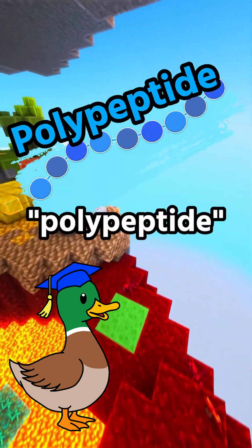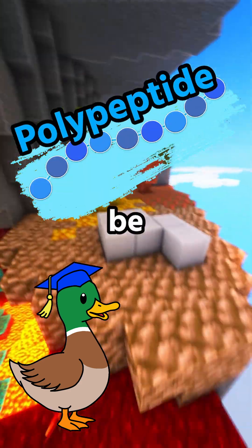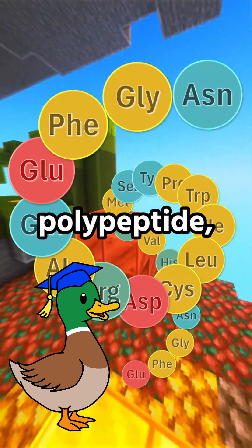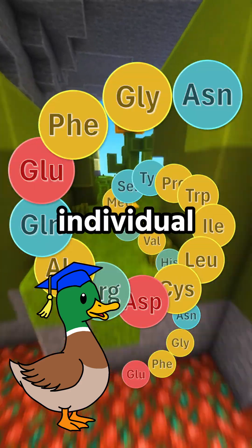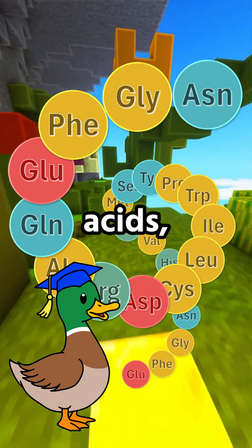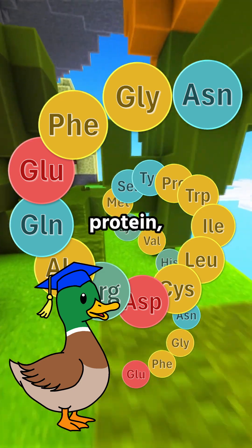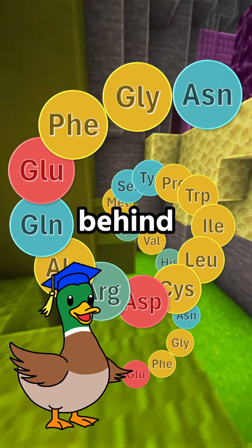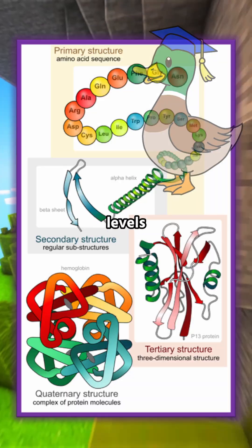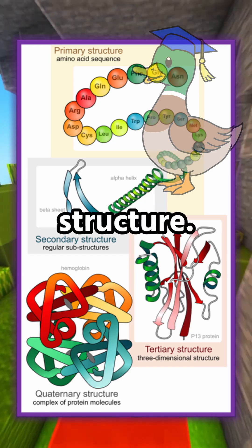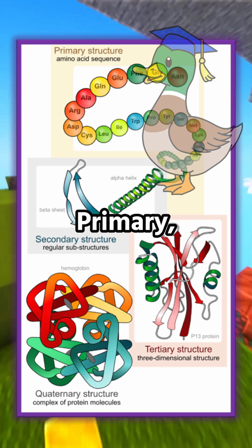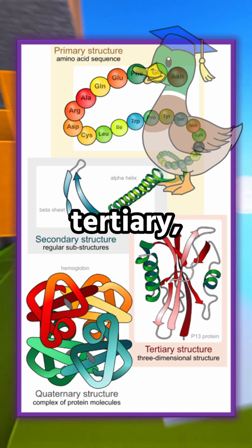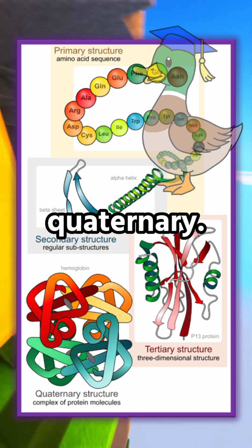Although the words protein and polypeptide can be used interchangeably — because a polypeptide, an individual chain of amino acids, is a protein — there's actually much more behind protein structure. There are four levels of protein structure: primary, secondary, tertiary, and quaternary.